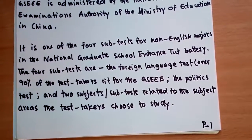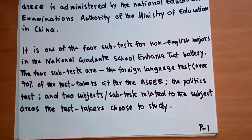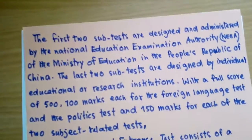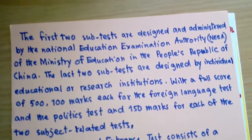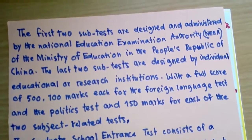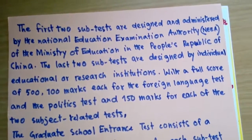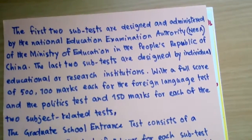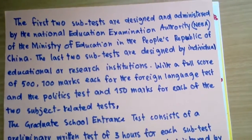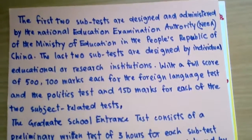The four sub-tests are: the foreign language test, the politics test, and two subject sub-tests related to the areas the test takers choose to study. The first two sub-tests are designed and administered by the National Education Examination Authority of the Ministry of Education in the People's Republic of China. The last two sub-tests are designed by individual educational or research institutions.